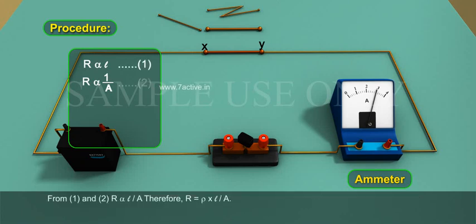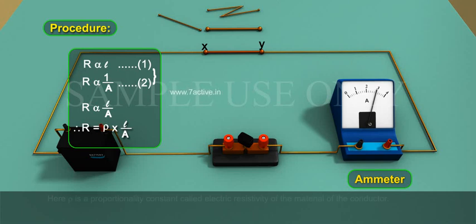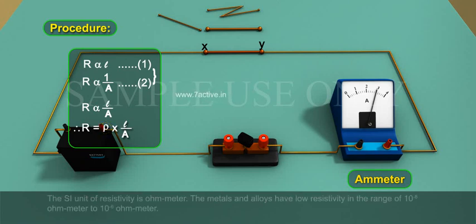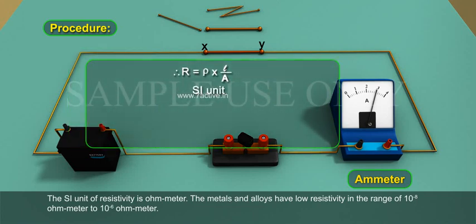From equations 1 and 2, R is proportional to L by A. Therefore, R equals ρ times L by A. Here ρ is proportionality constant called electric resistivity of the material of the conductor. The SI unit of resistivity is ohm meter.